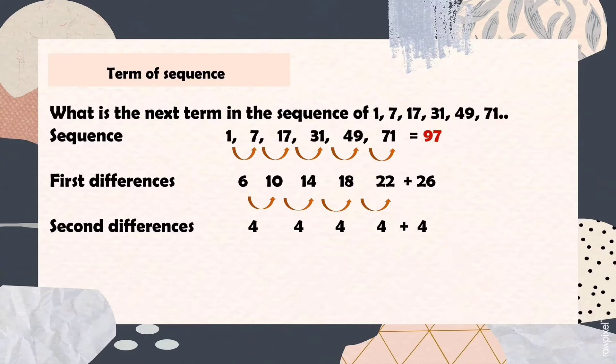49 minus 31, that is 18, and 71 minus 49, that is 22. As you can see, in the first differences they are not yet equal. So we are going to proceed to the second differences.